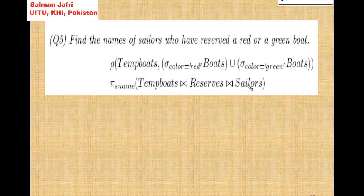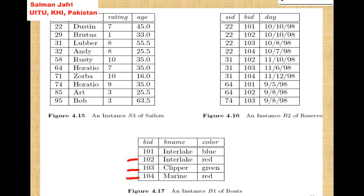Then we have a natural join of temp_boats with reserves and a natural join with sailors. From the natural join with reserves, rows 102, and several others are selected. Then joining with sailors, we have SID 22 selected, SID 31 selected, SID 64 selected, and SID 74 selected.